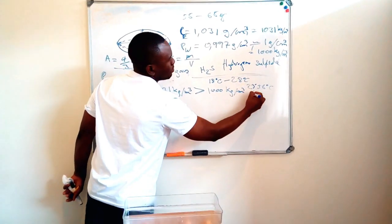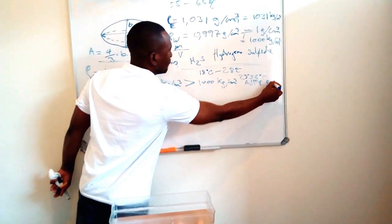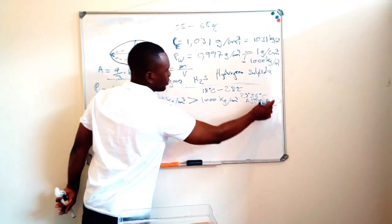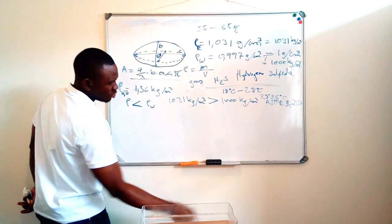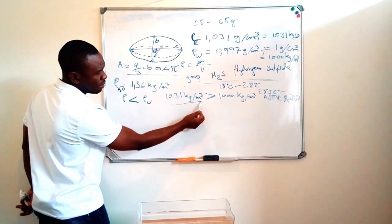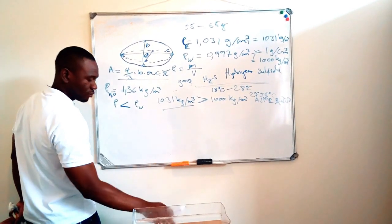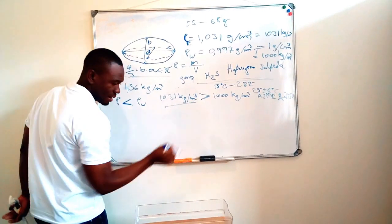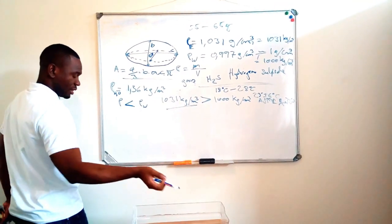So what's happening is the density of fresh egg, which is 1031 kilograms per cubic meter, is above the density of water at normal temperature. When we talk about normal temperature, we're talking about temperature between 18 degrees Celsius and 28 degrees Celsius, or 22 degrees Celsius plus or minus 5 degrees Celsius. This is ASME, American Society of Mechanical Engineers, and ISO, the European standards.